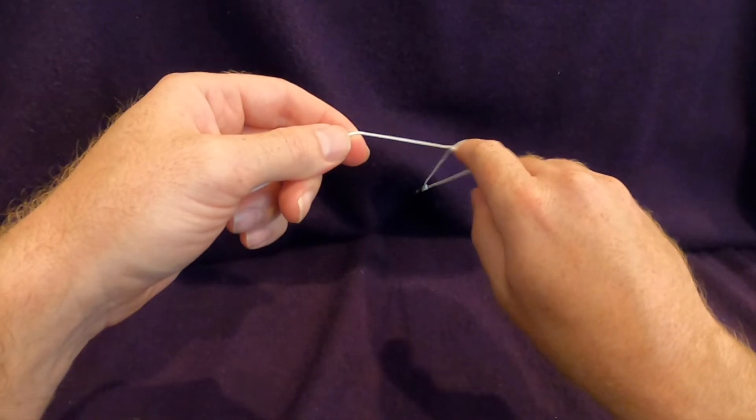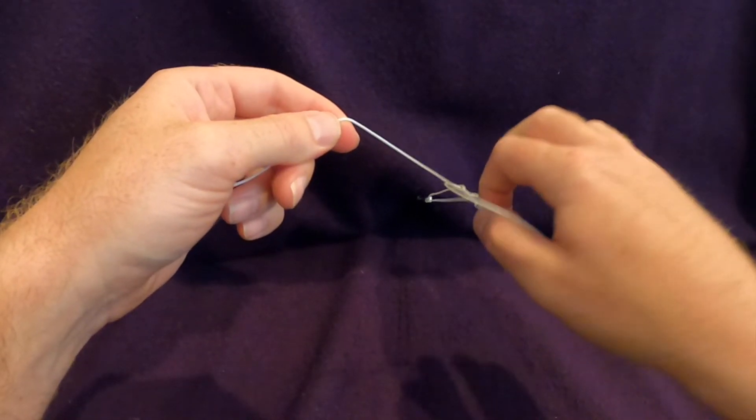You have to briefly let go of the suture before regrabbing it so that you can pull it through and tighten down the knot.